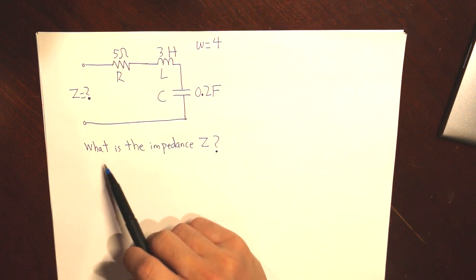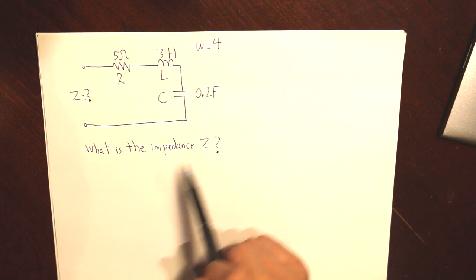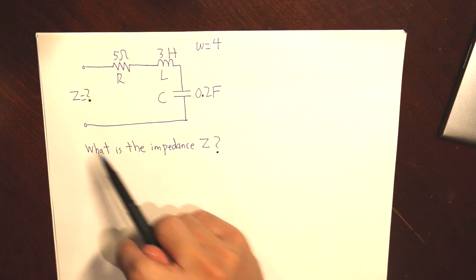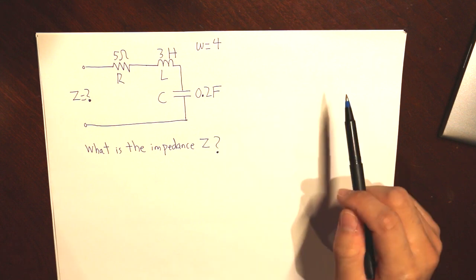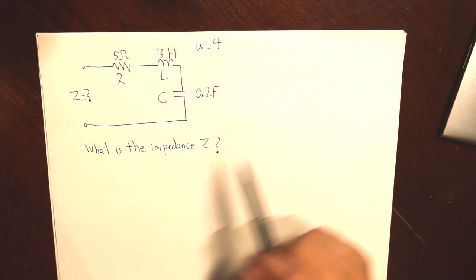And the question is to calculate what is the impedance, the total value of these three circuit elements together. Now here's the problem.